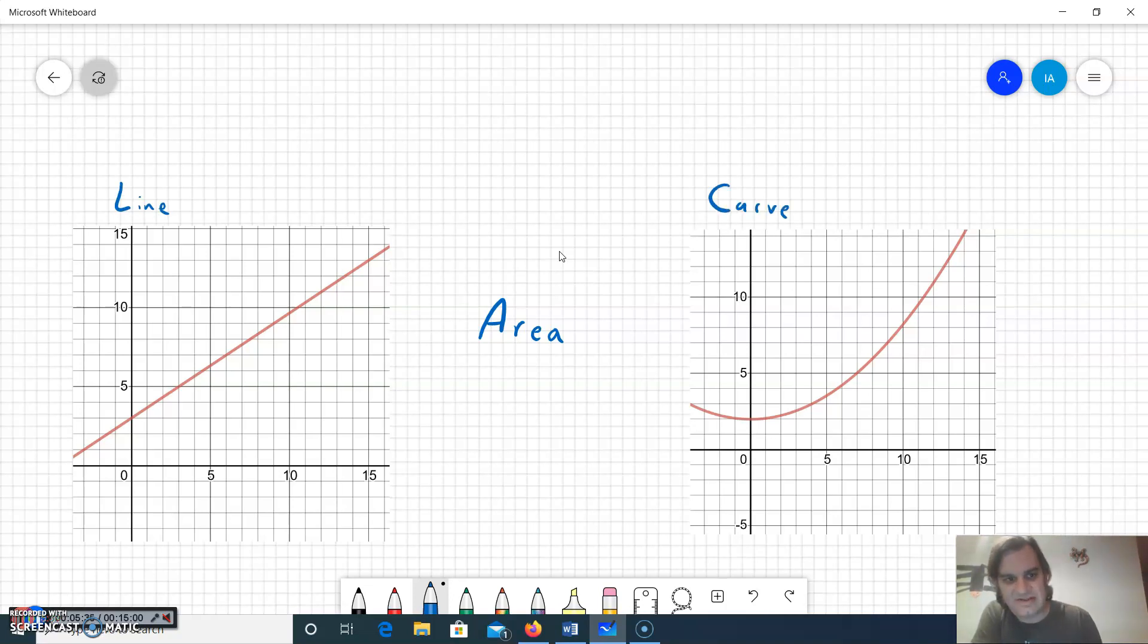So once again I've got the linear function over here, the line, and on the right I have the curve. So I have two graphs, one's a line, one's a curve. If I want to break this down, let's take a region.